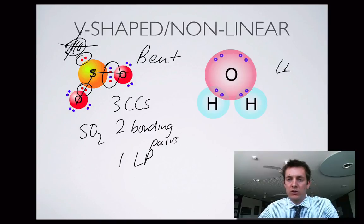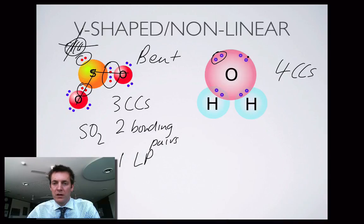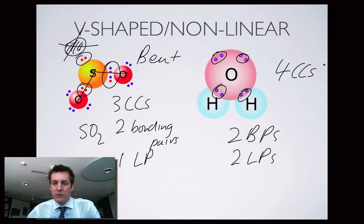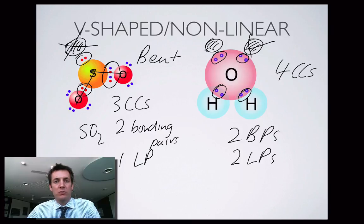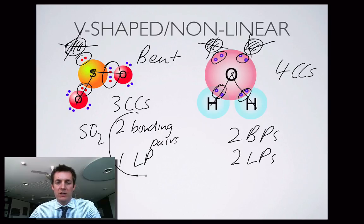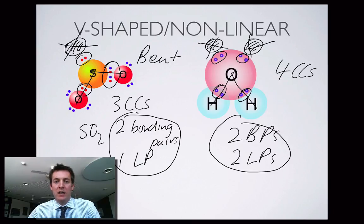In the second case, we've got four charge centres: two bonding pairs and two lone pairs. Because there isn't an atom in two of those positions, this isn't tetrahedral, and it's not trigonal pyramidal either — both those atoms are missing. So the shape of the molecule is just this V shape, or bent, or non-linear. The key point: two bonding pairs and one lone pair, or two bonding pairs and two lone pairs, both give you the V-shaped or non-linear shape. That covers all the shapes for the Year 12 course.